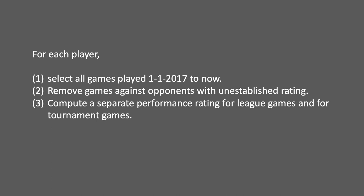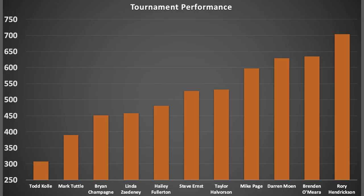Then for each player, we did three things: selected games played from 2017 to now — essentially a three-year period — removed games against opponents with unestablished ratings, and then computed a separate performance rating for league games and for tournament games. Looking just at tournament games — call it tournament performance — these players have on average about 1,800 tournament games, leading to a tournament performance number that goes from about 300 with Todd to about 700 with Rory. Next, we computed a separate performance rating for each player based only on league games, with no games crossing between the tournament performance and the league performance. These players have on average about 700 league games leading to the league performance rating, and those games are all played one at a time.